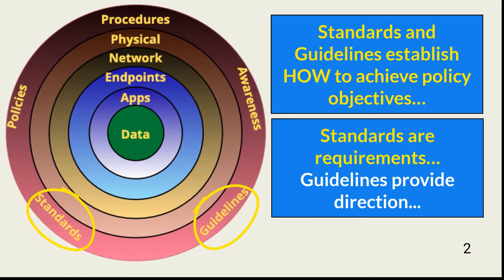A guideline is a recommendation — it is not a requirement. Guidelines provide more latitude in how security teams meet policy requirements. For example, an organization wants to ensure multi-factor authentication is used to access highly classified data, as stated clearly in an access control policy. However, management does not want to dictate how to achieve this in all situations. Consequently, guidelines stipulate that security use two of three authentication factors — something a user knows, something a user has, and something a user is.